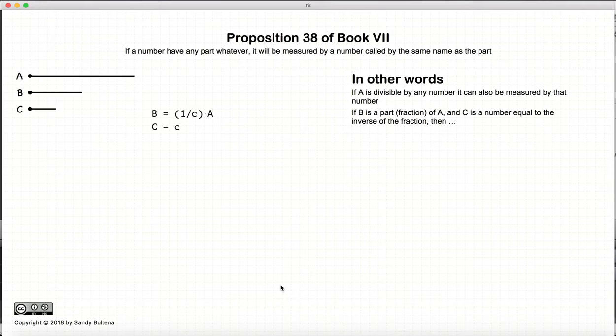So let's start that we have B is a fraction of A, and C is equal to the inverse of that fraction. So we have B is a certain fraction, one C of A. Then this proposition states that C will also measure A.